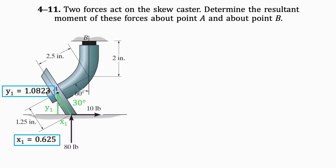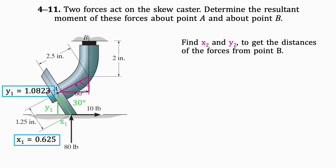Now we will move on to the next part of the question. We will redraw the given 60-degree triangle in pink and use this triangle to help us find the x and y distances of the forces from point B.